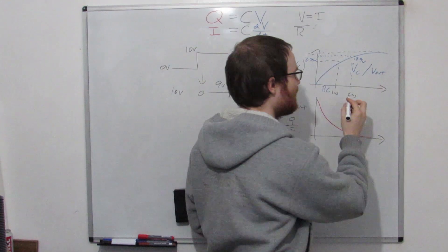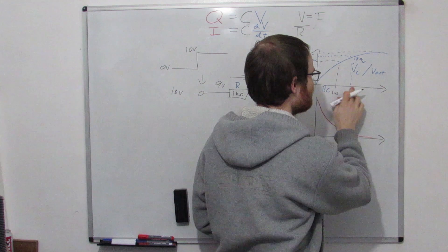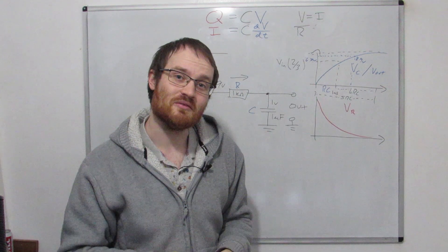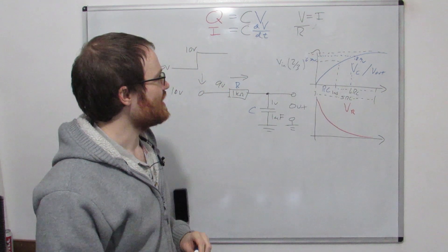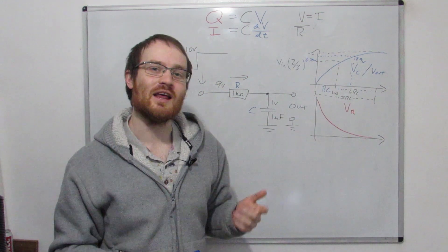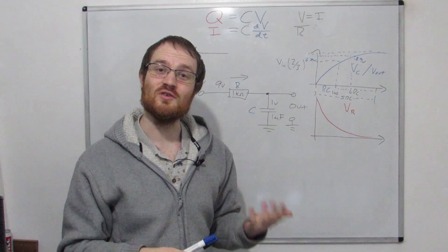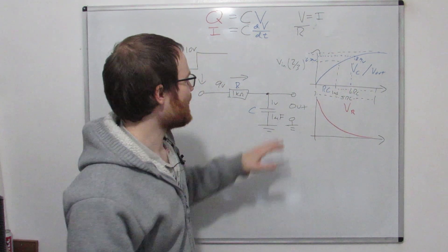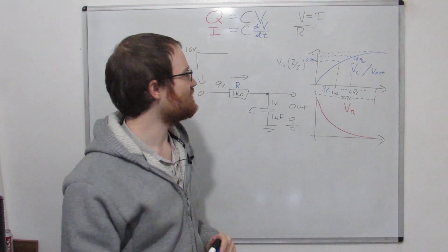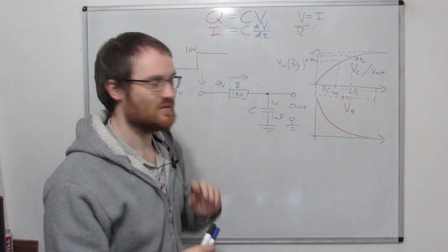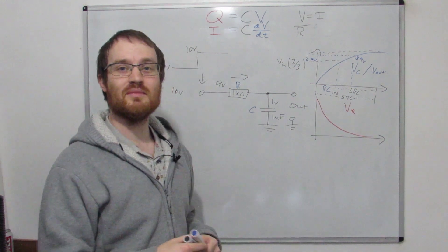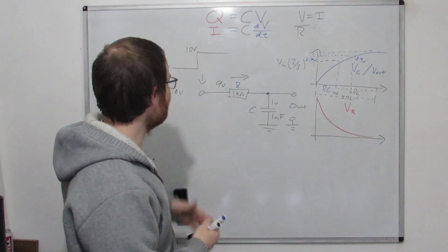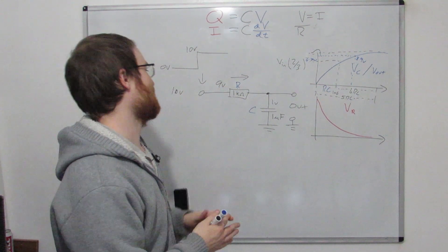There's another rule of thumb: after five time constants, we'll be 99% of the way there. So these are really easy-to-use rules of thumb to calculate the charging times with a constant voltage. And it's the same but the other way around if we're discharging.